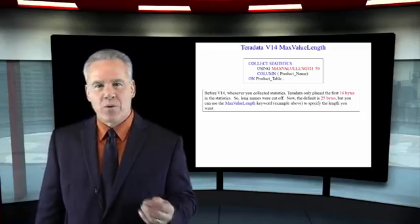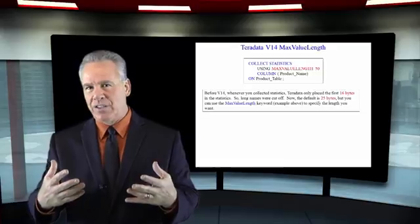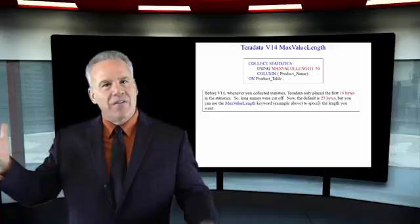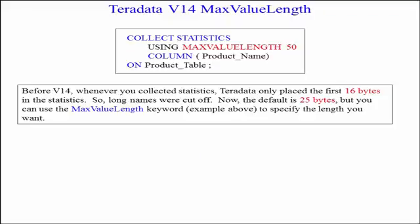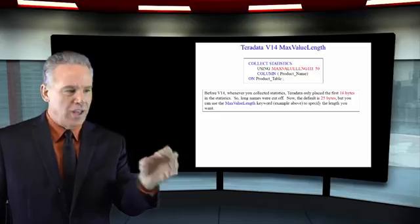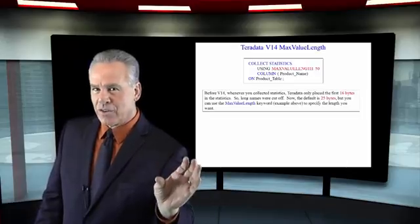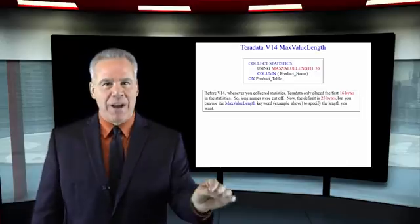Before V14, any time you collected statistics on any index that was longer than 16 characters, they just cut off after 16. Now in V14, that default is now 25, so they'll store up to 25 characters in any of these indexes you collect on. But what's really interesting is you can use the Max Value Length option and put a length in there to say you want to store up to 50 characters, because that's going to really help your system performance.